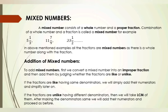How do we add mixed numbers? Mixed numbers are added following the same basic steps. First of all, we convert each mixed number into an improper fraction. Then, if you have like fractions, you add directly; if you have unlike fractions, you must first find a common denominator before adding.